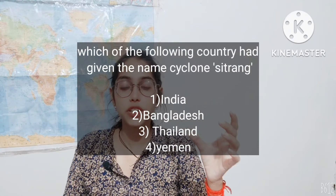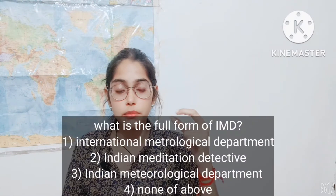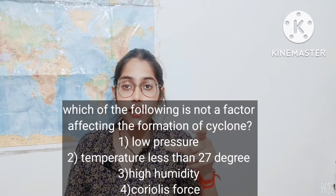The last answer: Ireland is not a part of the UK. My next questions for you are: which country gave the name Cyclone Sitrang, what is the full form of IMD, and from the following, which is not a factor affecting the formation of a cyclone? That's all for today's video — if you liked it, please like, share, and subscribe. I hope you enjoyed it. Thank you.